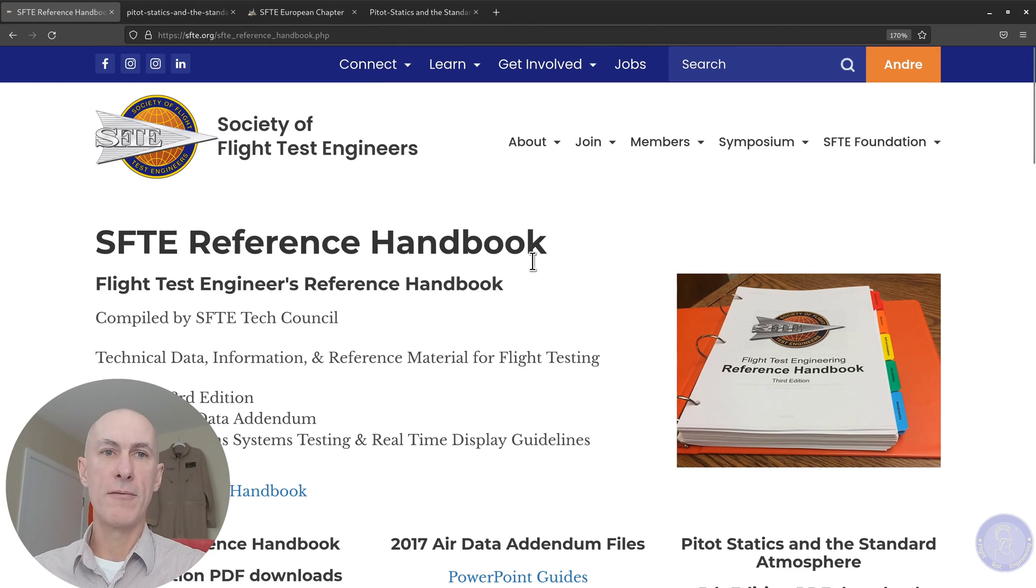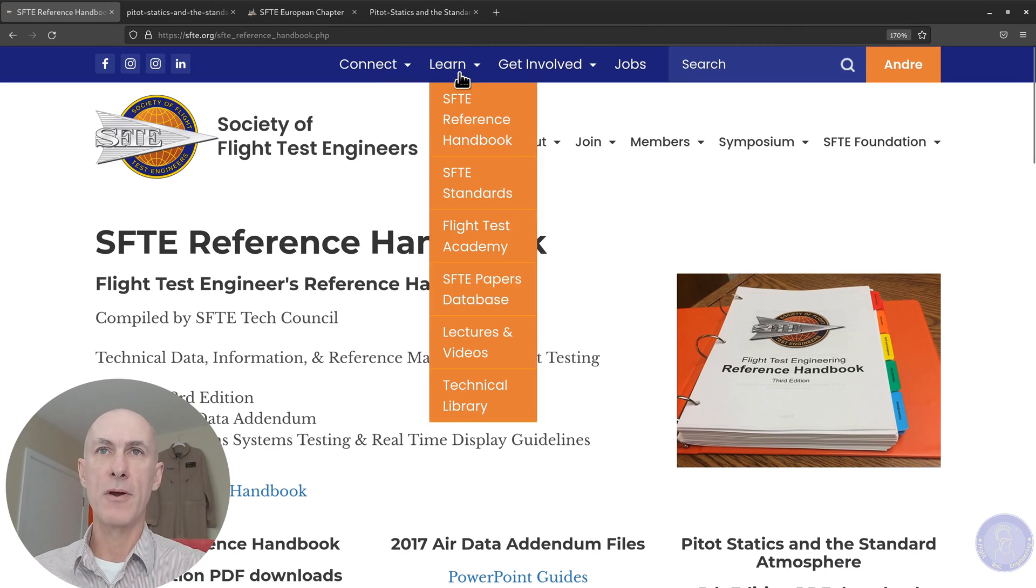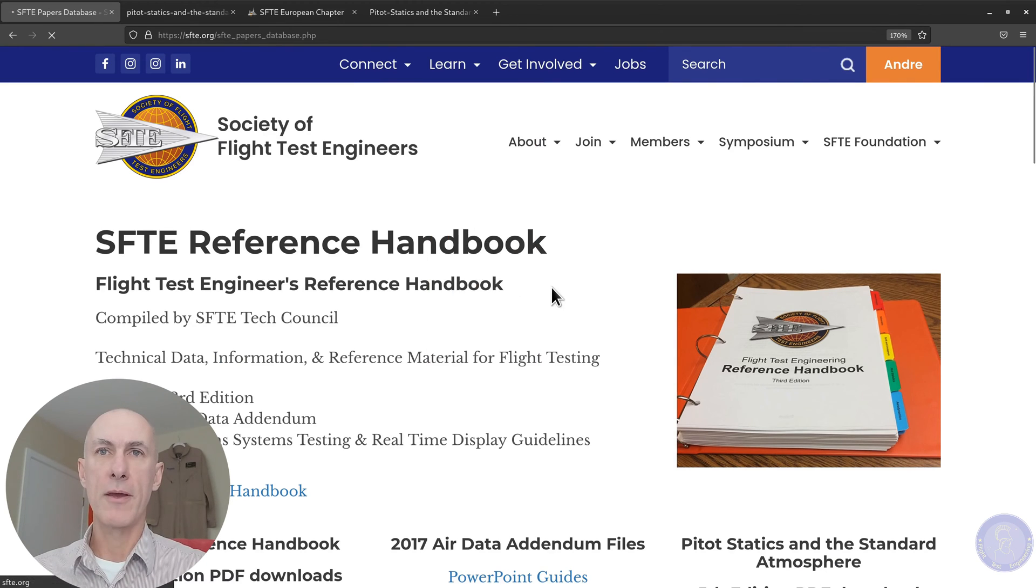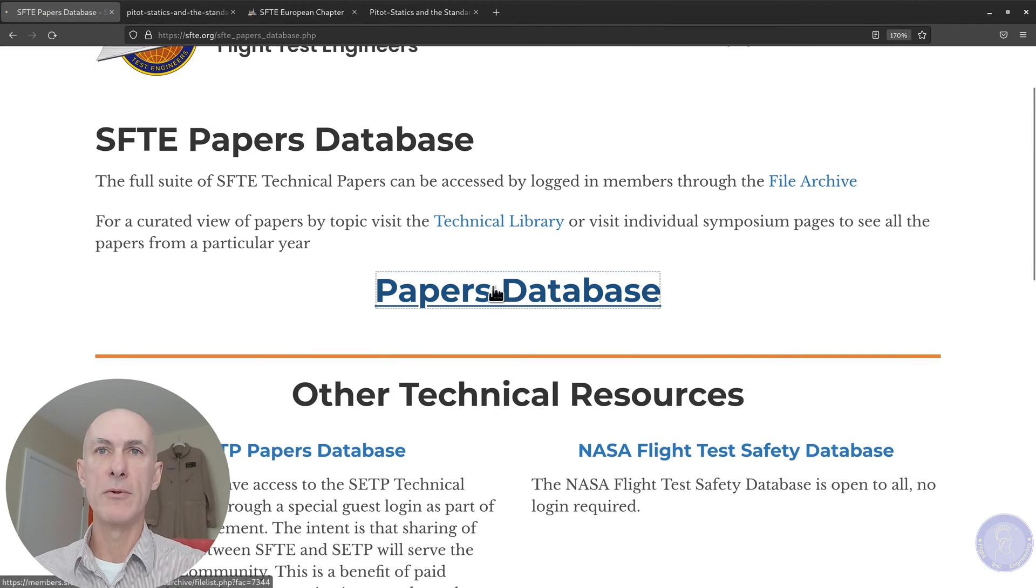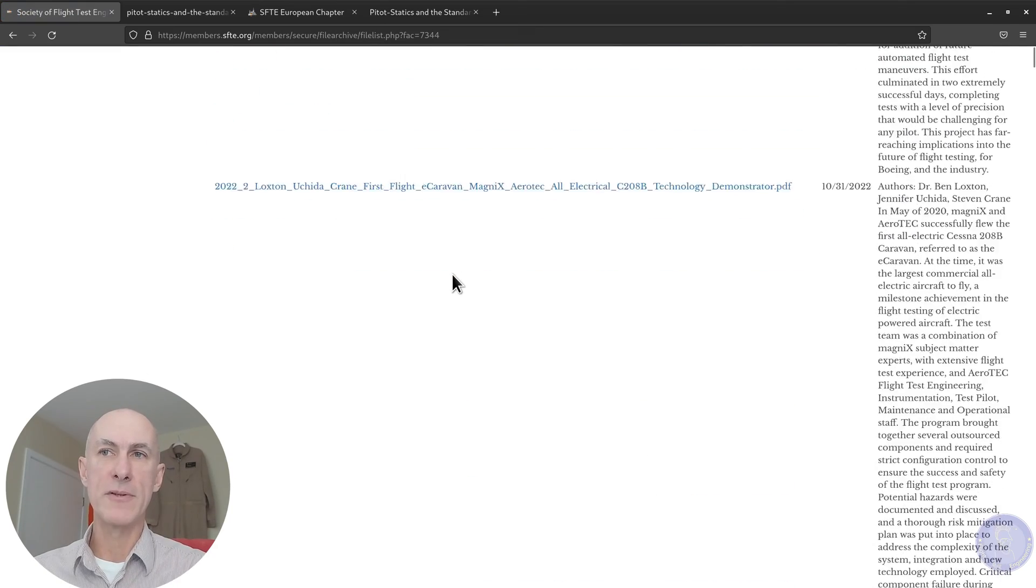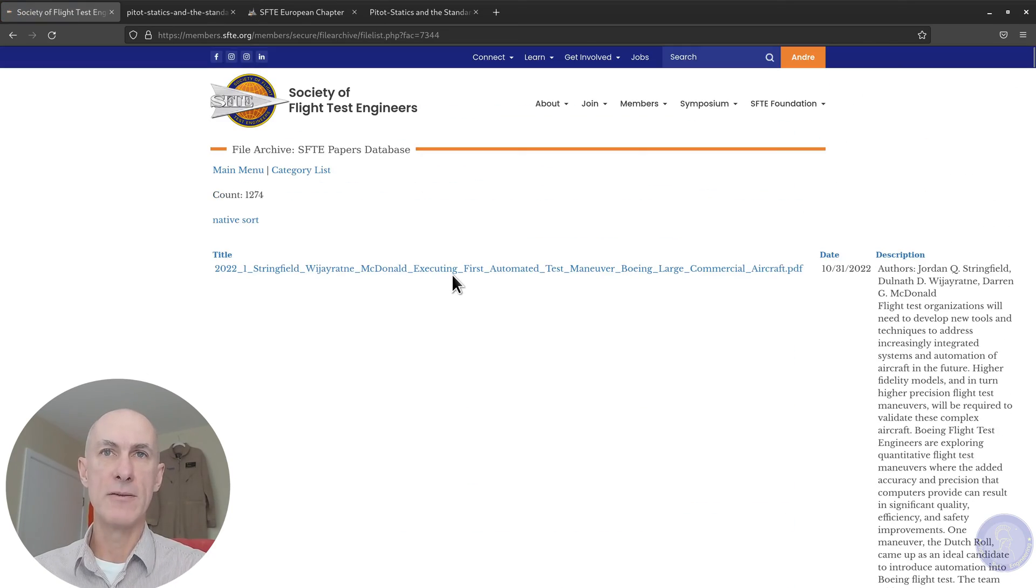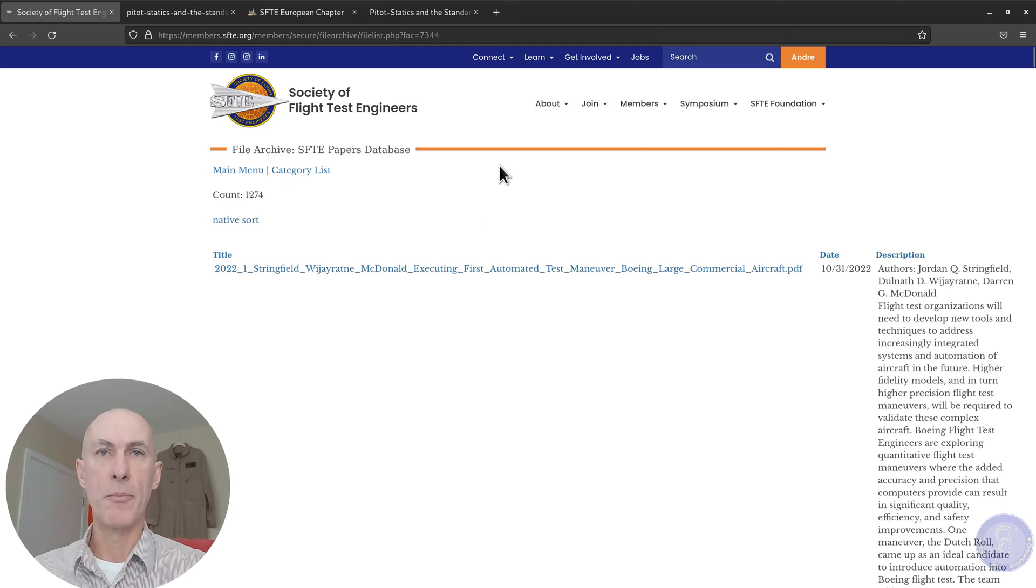There are other perks of being a member of the Society, like you'll be able to access the papers database. So, if you come here and you click here on the database, you will be able to search all of the papers that were presented on SFTE's symposiums. Also, you'll be able to contact members and fellow FTEs, which is great. It's a great place to be engaged, and I highly, highly recommend you be a member of the SFTE.